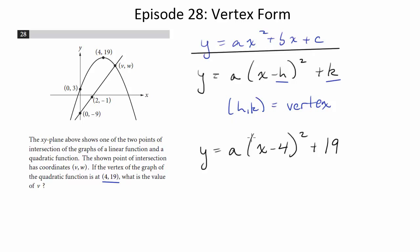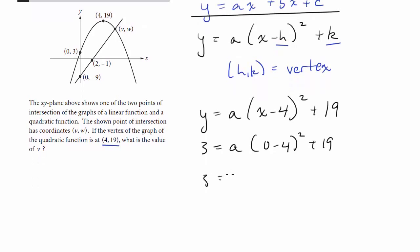You're not going to be able to plug in 4,19 because you won't get any information that way. But we do have another point. It's (0,3). So let's plug that in. 3 equals a times (0 minus 4) squared plus 19. So 3 equals 16a plus 19.